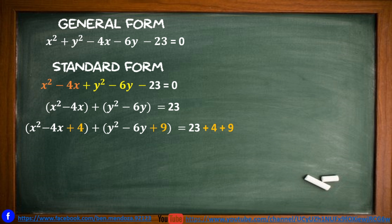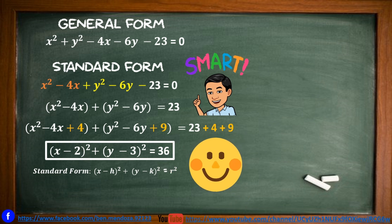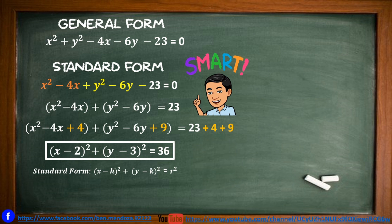On the right side, we add 23 plus 4 plus 9, which gives 36. So the final answer is the quantity of x minus 2 squared plus the quantity of y minus 3 squared equals 36 — converted from general to standard form.